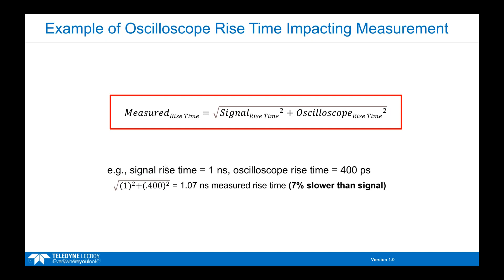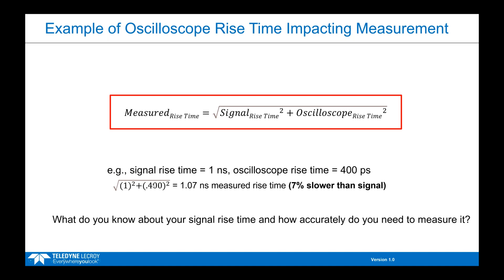For example, looking at a signal with a 1 nanosecond rise time, if we were to capture that signal on an oscilloscope that had a rise time of 400 picoseconds, then plugging those rise time values into the equation, we would measure that signal to have a rise time of 1.07 nanoseconds — which is 7% slower than the signal's actual rise time. So when selecting oscilloscope bandwidth, it really comes down to what you know about your signal's rise time and how accurately you need to capture it.